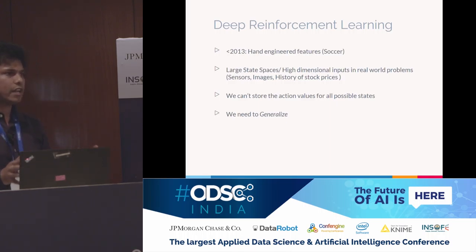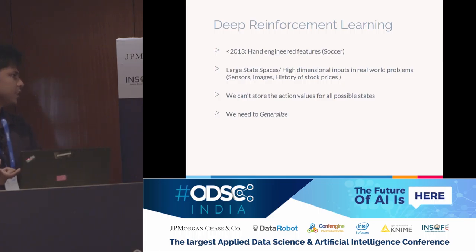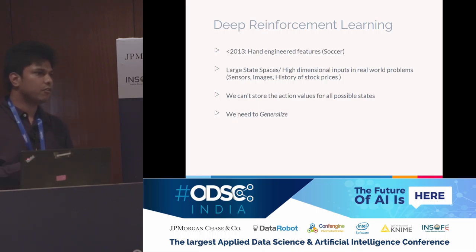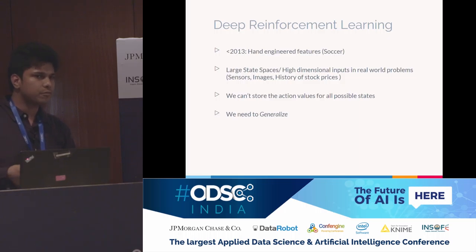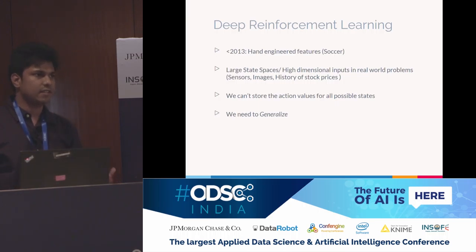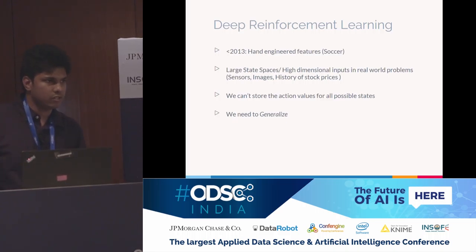Traditionally, reinforcement learning algorithms needed an engineer to code all the features it could use. But in the real world, RL algorithms face high-dimensional state spaces. Imagine a robot with a mounted camera — the image it sees can have a huge number of pixel combinations, making it very hard for a person to manually extract features. We need to calculate the action value function for all states, which is very tough if the state space is continuous or innumerable. We need some way to generalize — if we encounter a new state similar to one we've seen before, can we use that knowledge? Deep neural networks automatically learn efficient feature representations for the task.